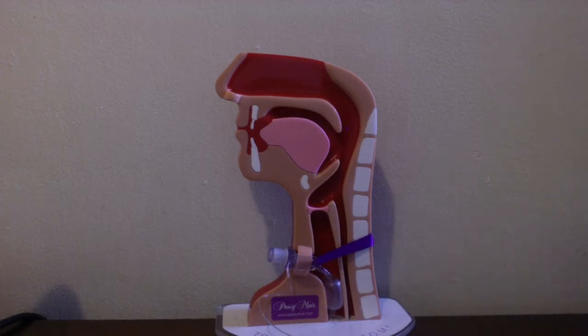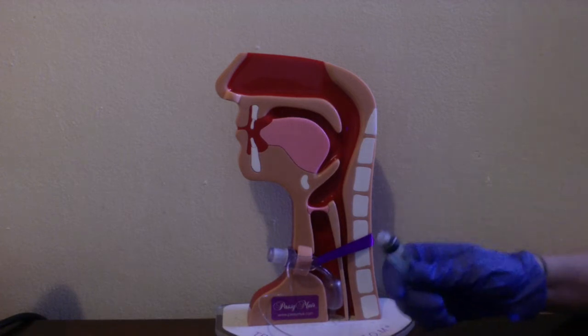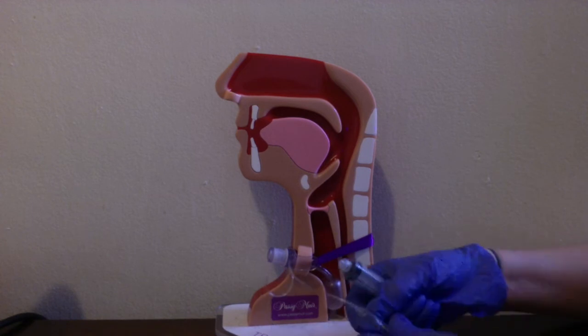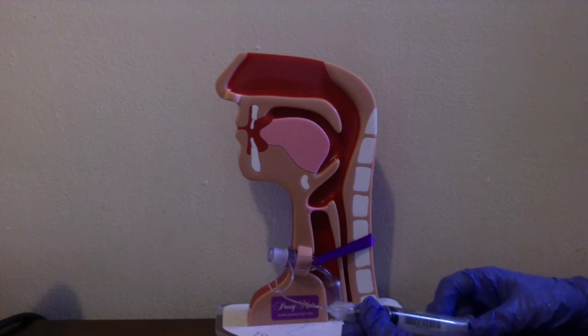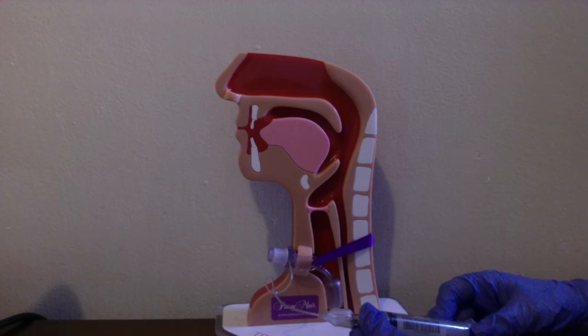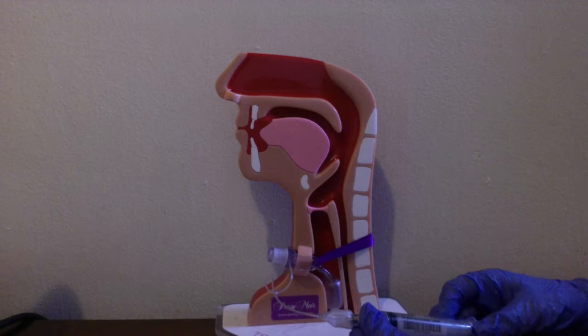To deflate the cuff, first take a 10cc syringe and place it inside the pilot balloon. We want to slowly deflate the cuff while suctioning the patient. If the patient has secretions, we might want to suction the patient before deflating the cuff or use subglottic suctioning if that's available.